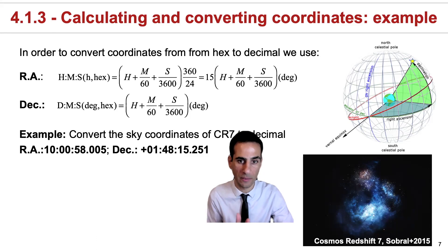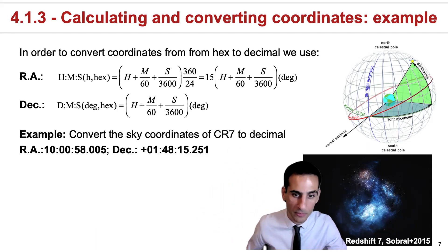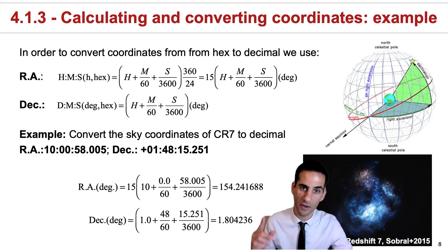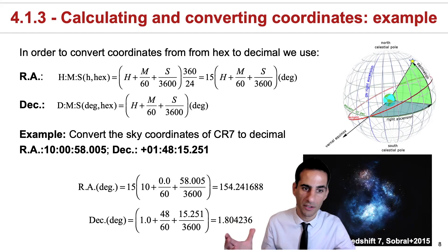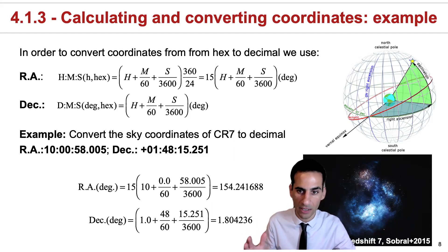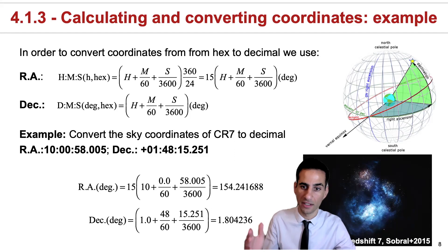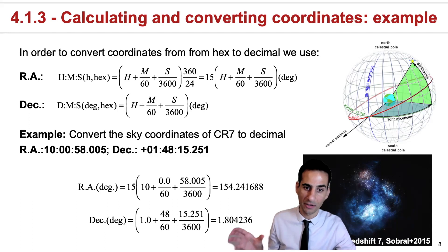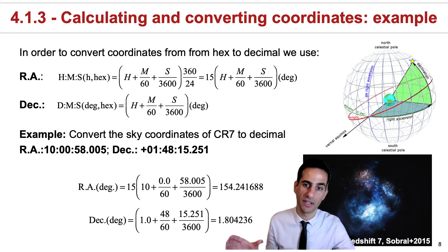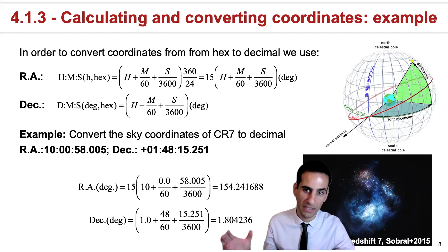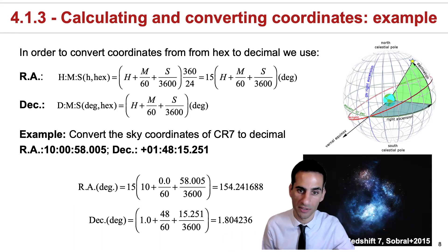Now hopefully you know what those coordinates mean. If you need to convert them to the decimal system, all you need to do is apply the coordinate transformations shown above. For right ascension, the key thing to remember is that because coordinates are given in hours, you need to multiply by 15 — that is essentially 360 divided by 24 hours. For declination you don't need to do that; you're just converting arc seconds and arc minutes to get a decimal degree value.